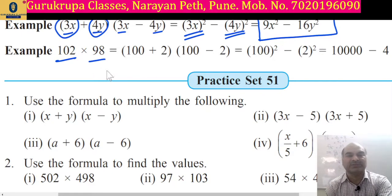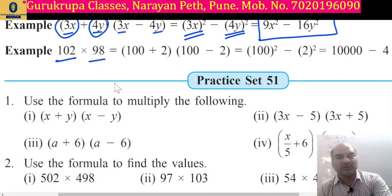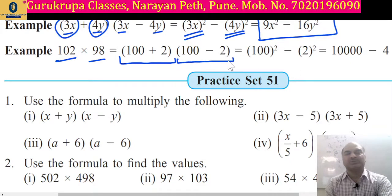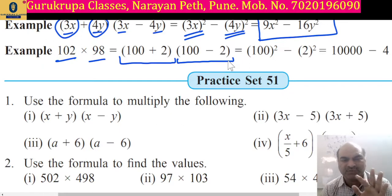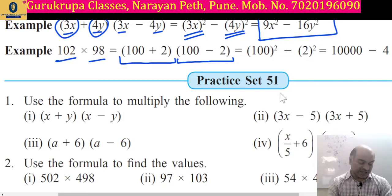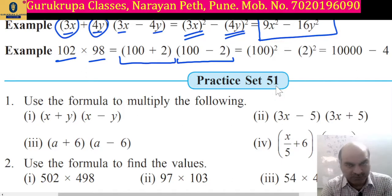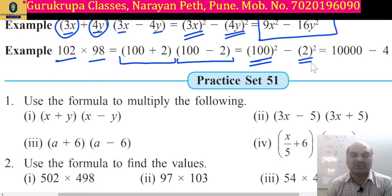We have to find the product of these two numbers. Now 102 can be converted into 100 plus 2, giving us a binomial. And 98 can be converted into 100 minus 2. So by the expansion formula, a plus b multiplied by a minus b equals a square minus b square, where a is 100 and b is 2. So we get 100 square minus square of 2.